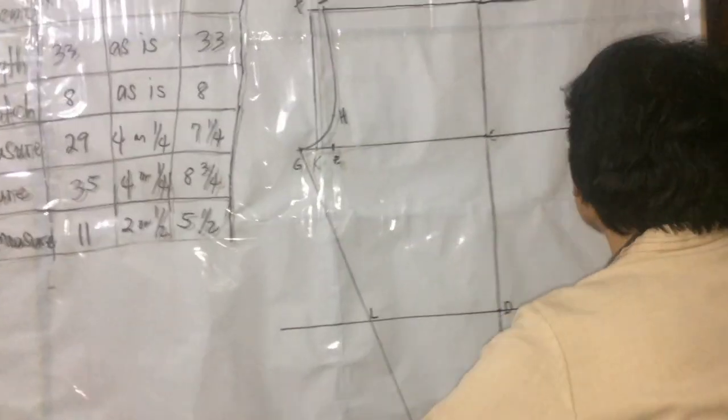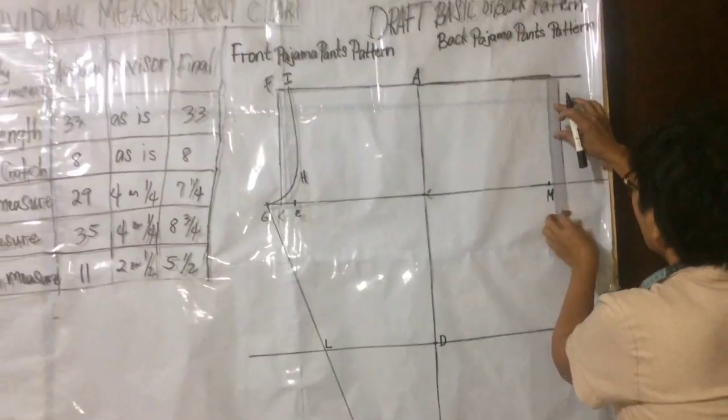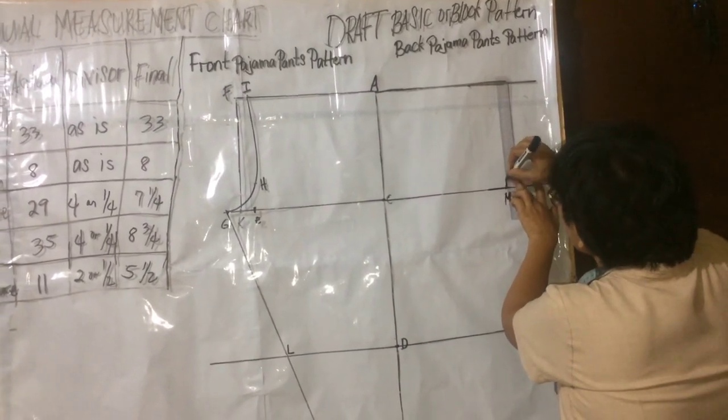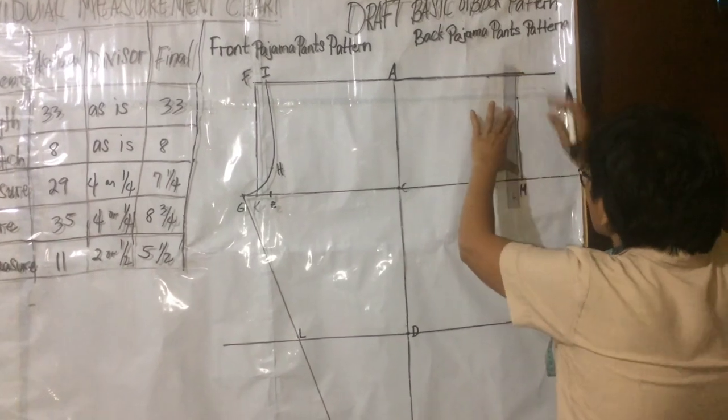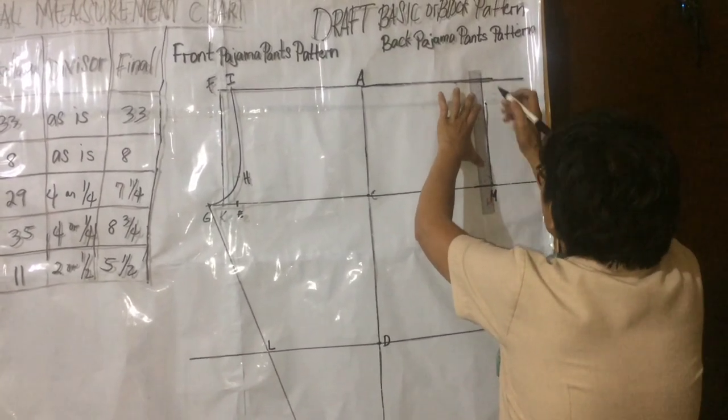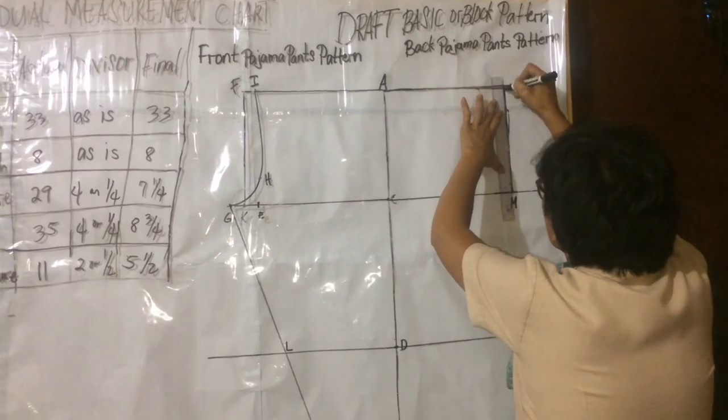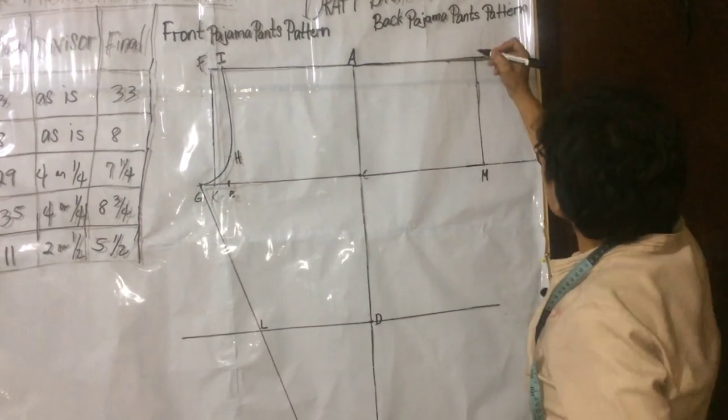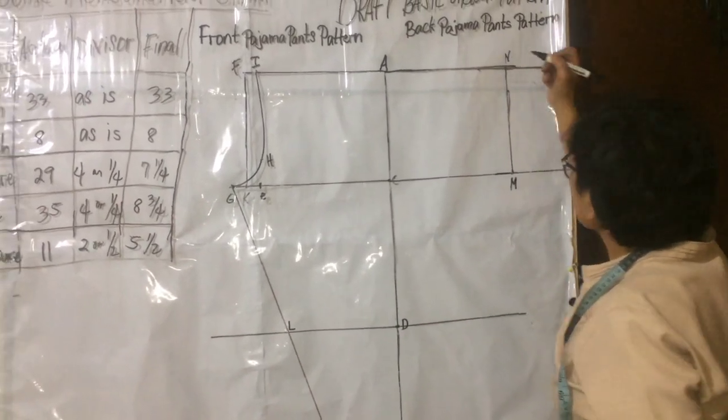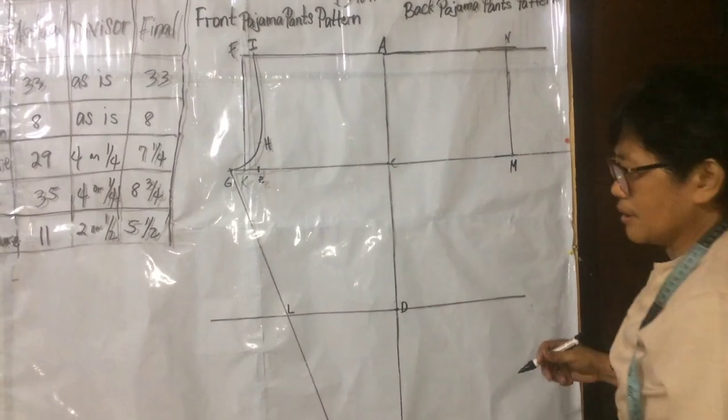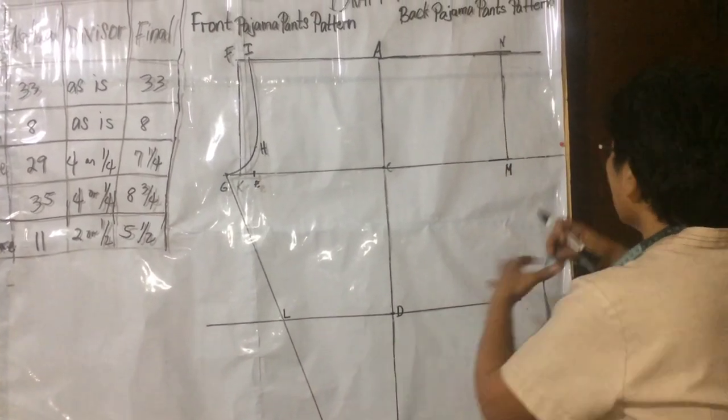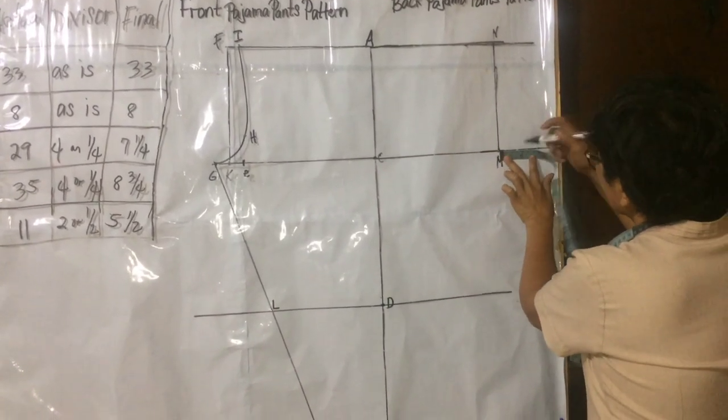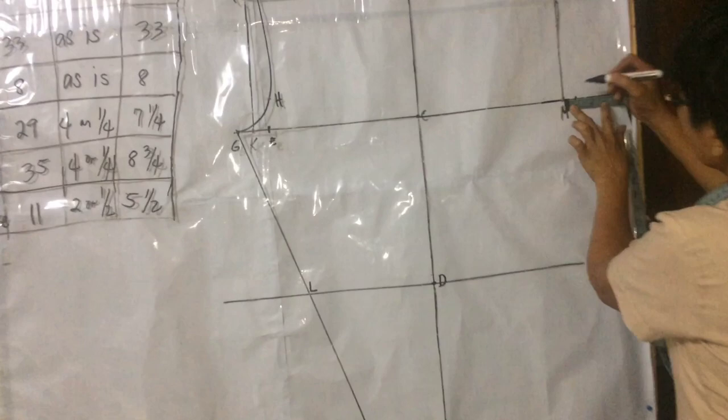Extend line M up to line A. Mark M. From point M, measure three fourths inch to the right. Mark O.